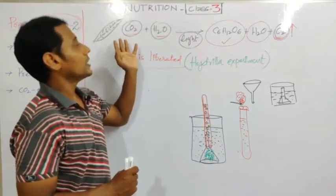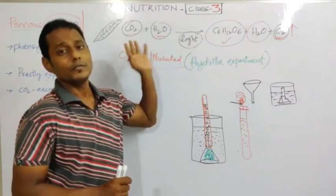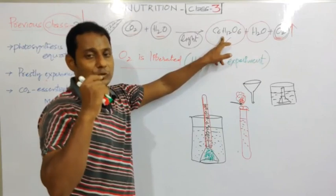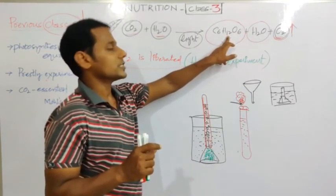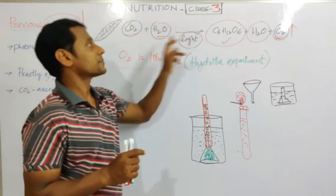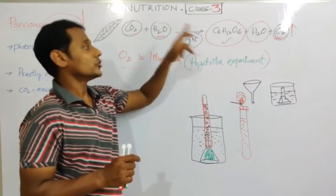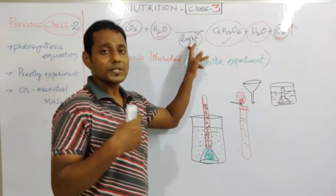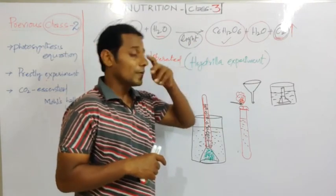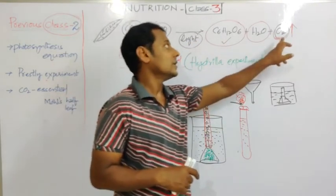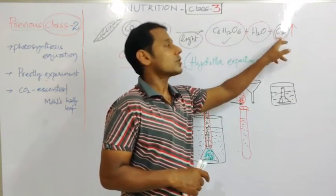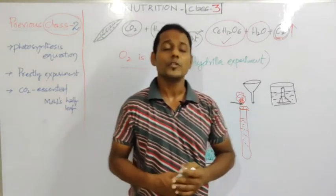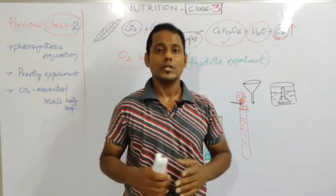So these are the experiments we have done using the photosynthesis equation. First experiment: starch formation. Second experiment: carbon dioxide is essential. Next experiment: light is essential. Next experiment: oxygen is liberated in the photosynthesis process. These are the experiments we should learn in the first unit.